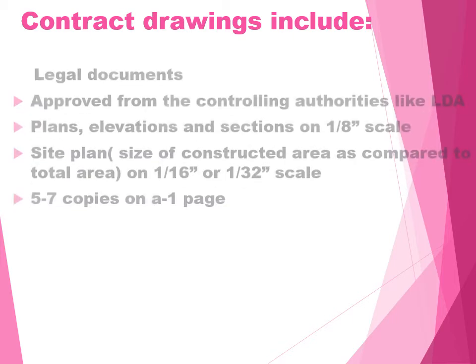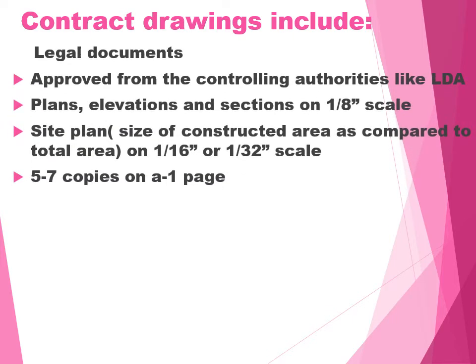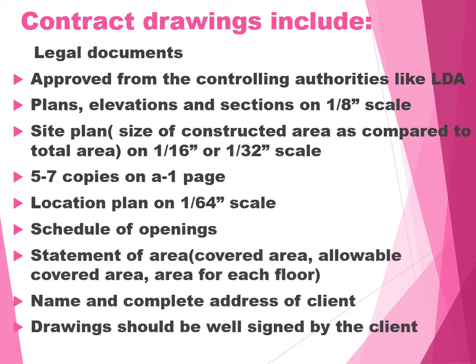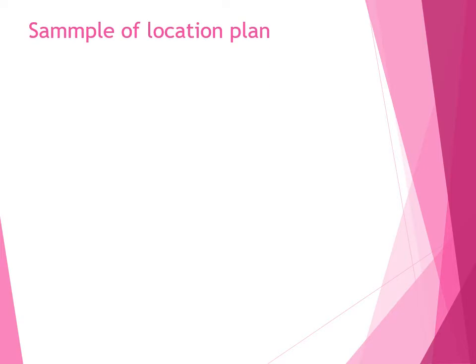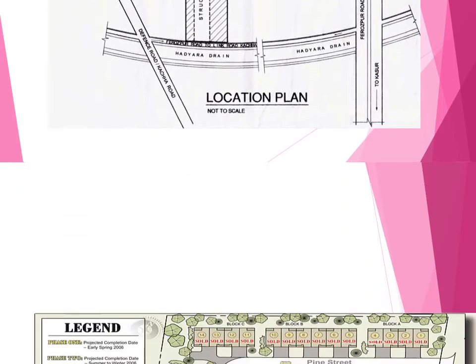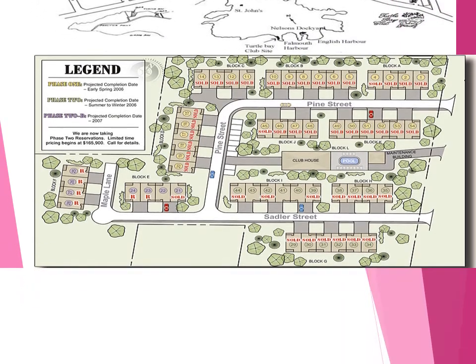Contract drawings include legal documents approved by the consulting local authorities, plans and elevations, site plan, 5 to 7 copies of the drawing, location plan, schedule of opening, statement of area, covered area, allowable FSI, non-FSI, etc., and the name and complete address of the client. The drawing should be signed by the client. A sample of the layout drawing and location plan has been indicated and can be verified from the attached sketches. The project identity has been mentioned in this drawing.